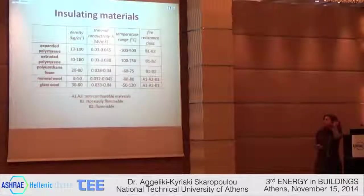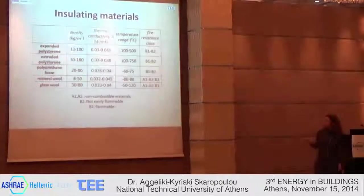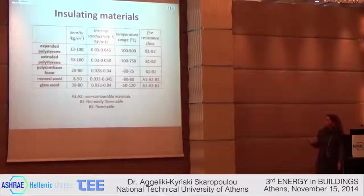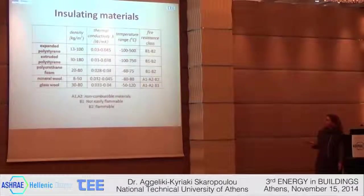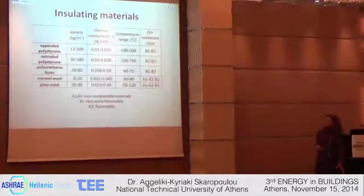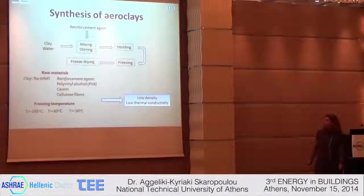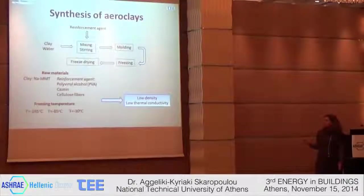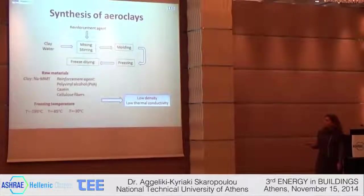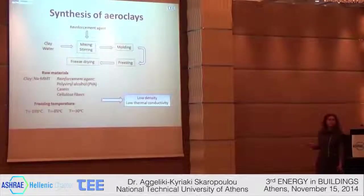Here you can see some insulating materials with their properties. Their thermal conductivity ranges from 0.03 to 0.45. For mineral wool and glass wool, they are classified as non-combustible materials, while insulating materials with polystyrene are classified as not easily flammable. In Greece, the most common insulating material is expanded polystyrene. For the synthesis of aeroclay, you have to mix clay with water, then with the reinforcement agent. After forming the suspension, you have to freeze and freeze-dry. The raw materials we used were clay — sodium montmorillonite as clay — and as a reinforcement agent we used polyvinyl alcohol, PVA, casein, and cellulose fibers.